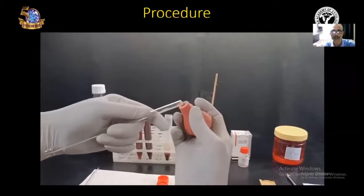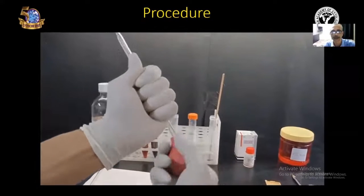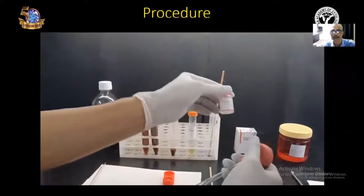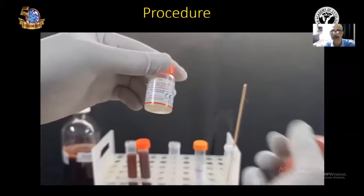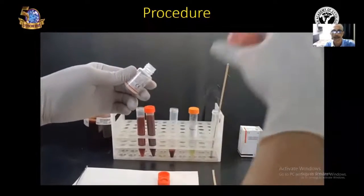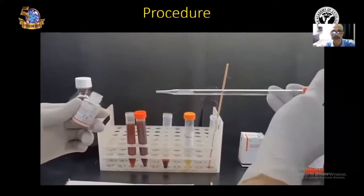Now, next step is adding the thromboplastin. Take another Pasteur pipette and add three drops of thromboplastin. Open the thromboplastin bottle slowly and put three drops of thromboplastin into the sediment.